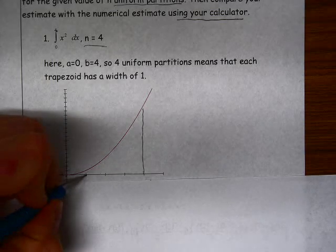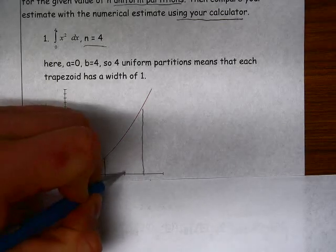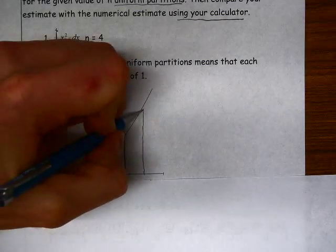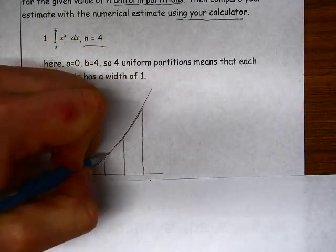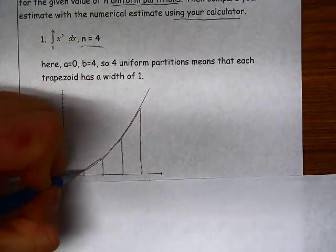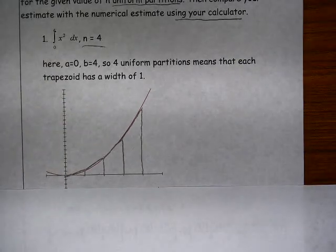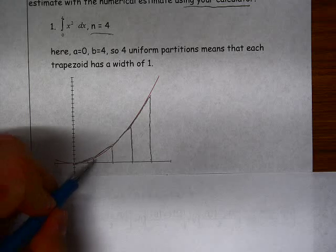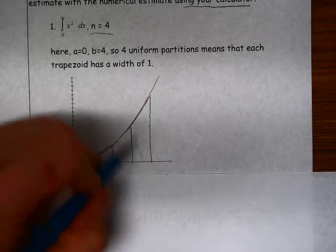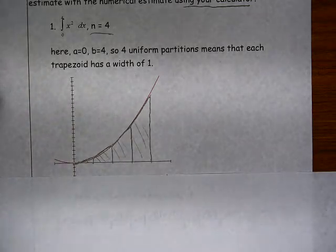So we have four subintervals, they're going to look like this. So I could draw those trapezoids kind of looking like this. So I'm going to calculate the area of each one of these trapezoids, and then just add up those four areas.